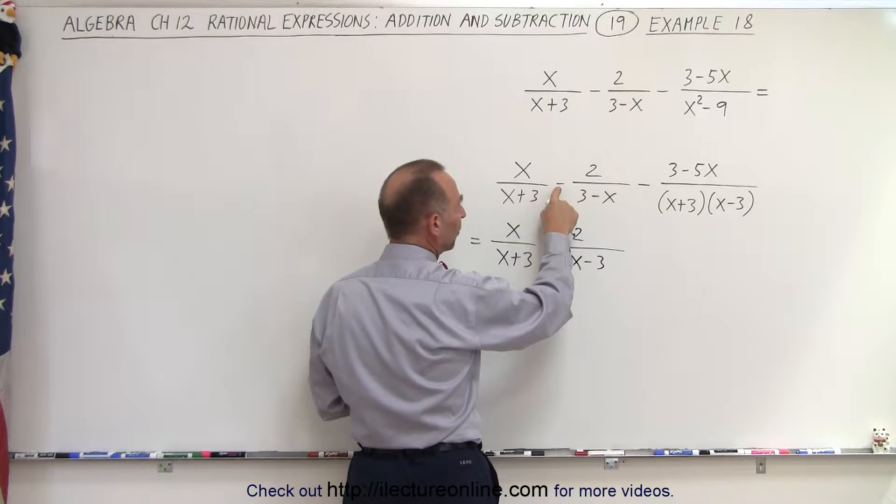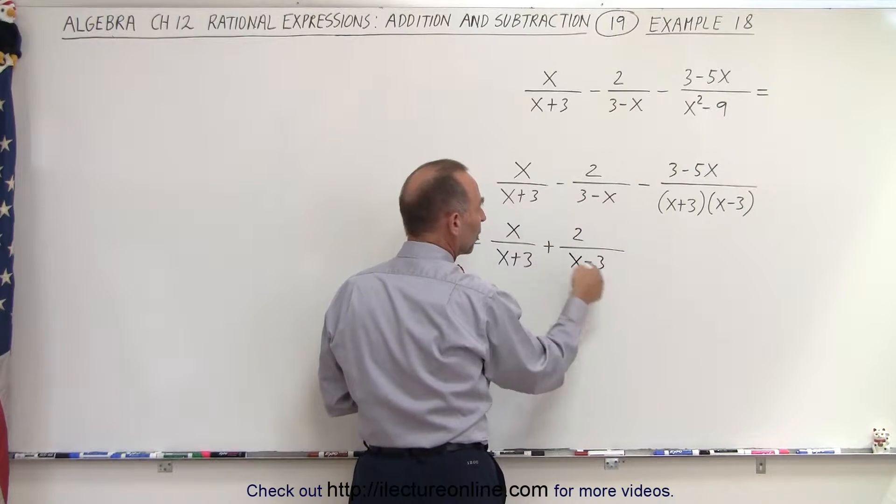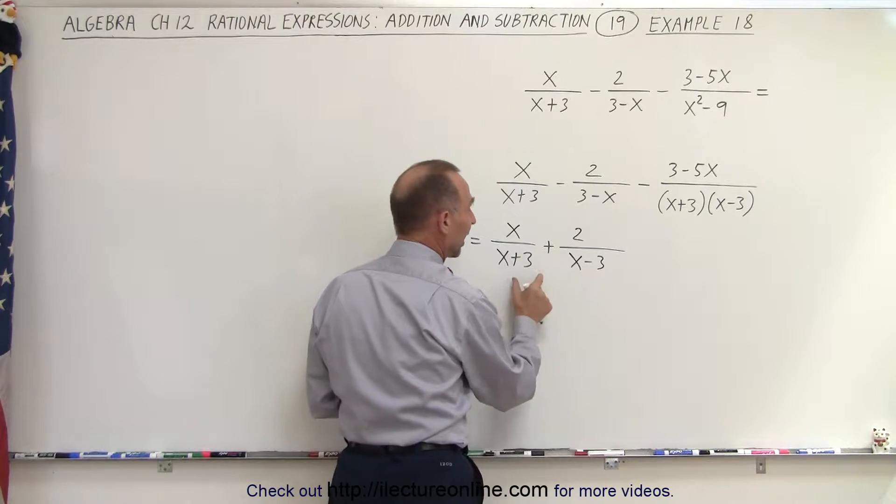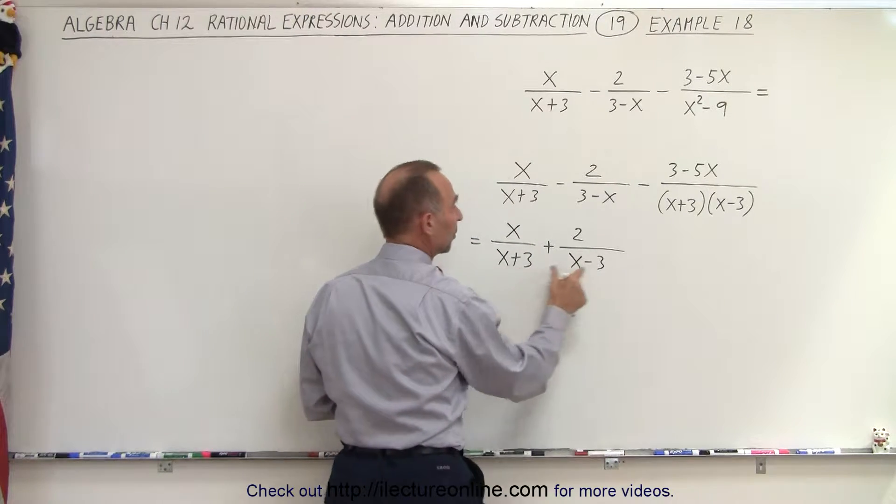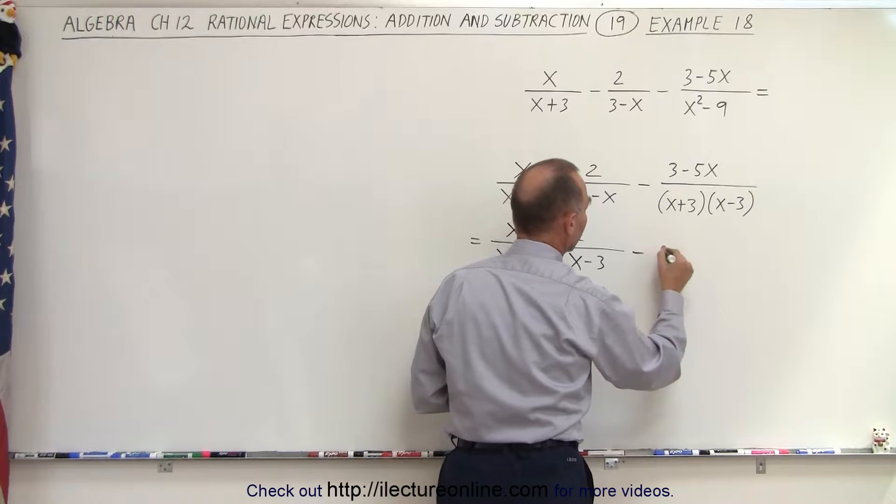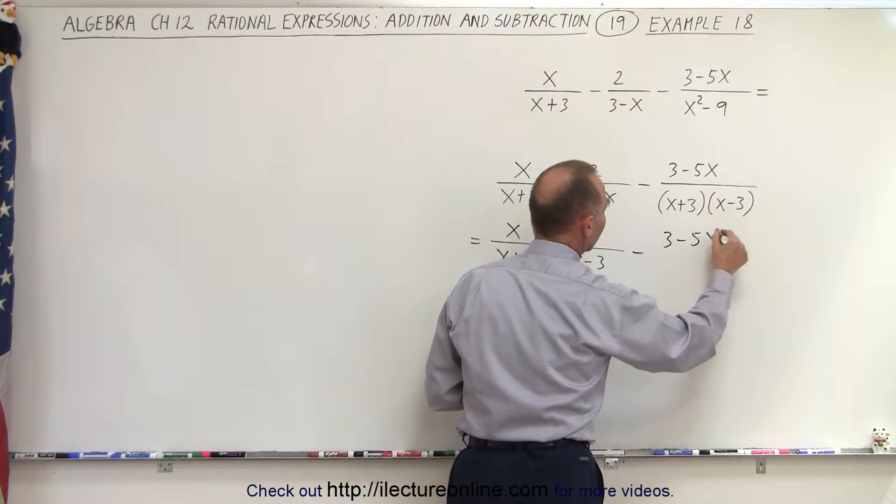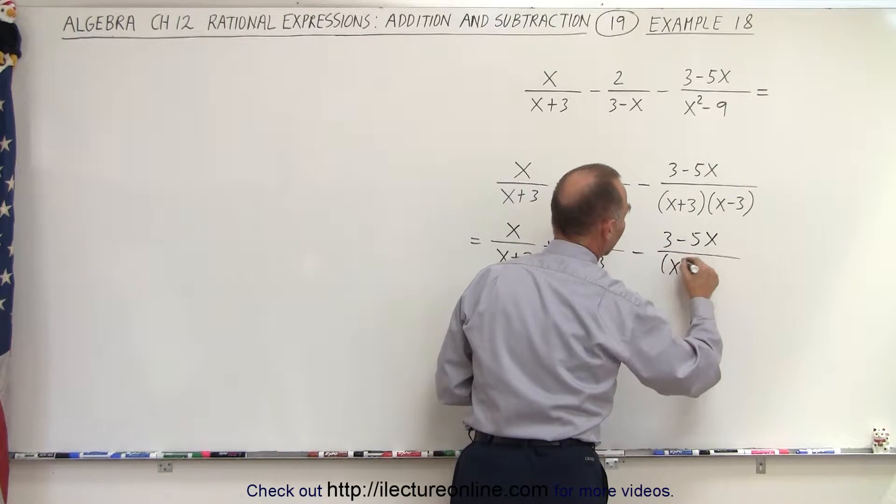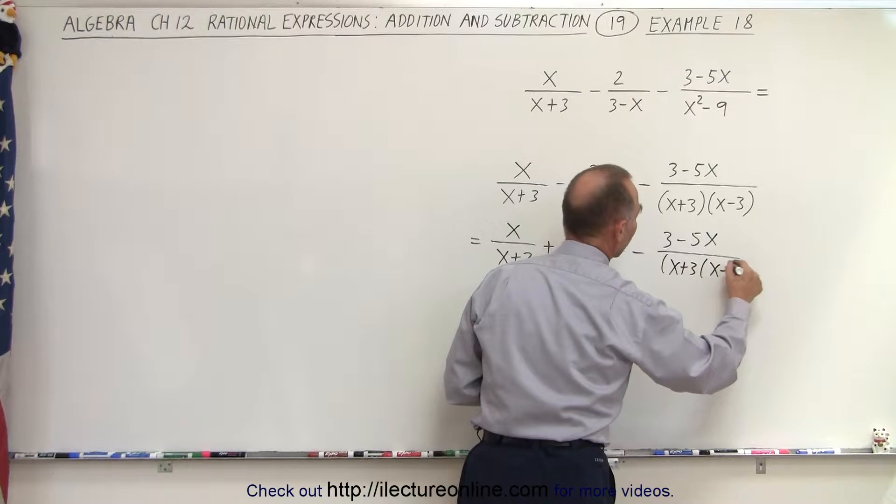So by making this a plus and flipping these over, we negate it one by the other, and now we have exactly x minus 3, x plus 3, which is common with this denominator, minus 3 minus 5x divided by x plus 3 times x minus 3.